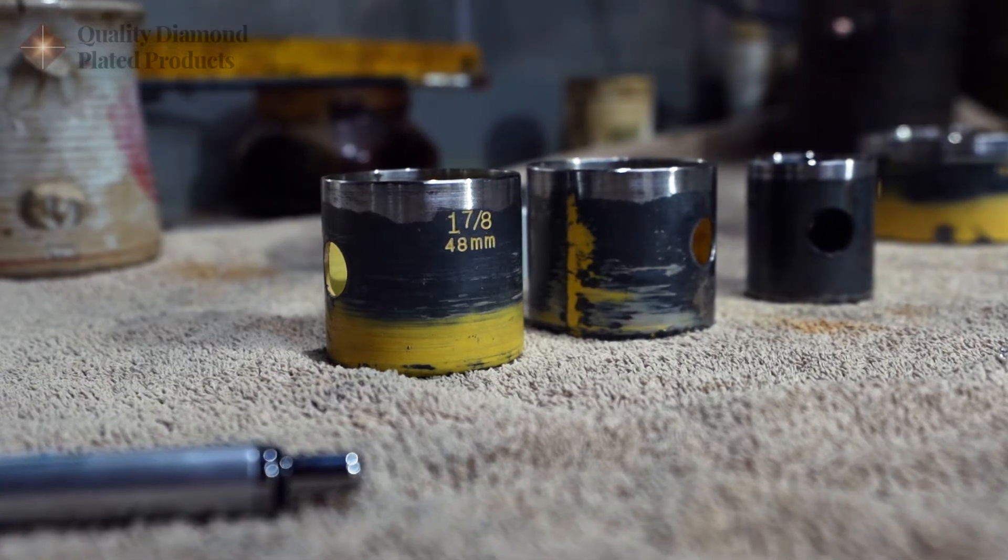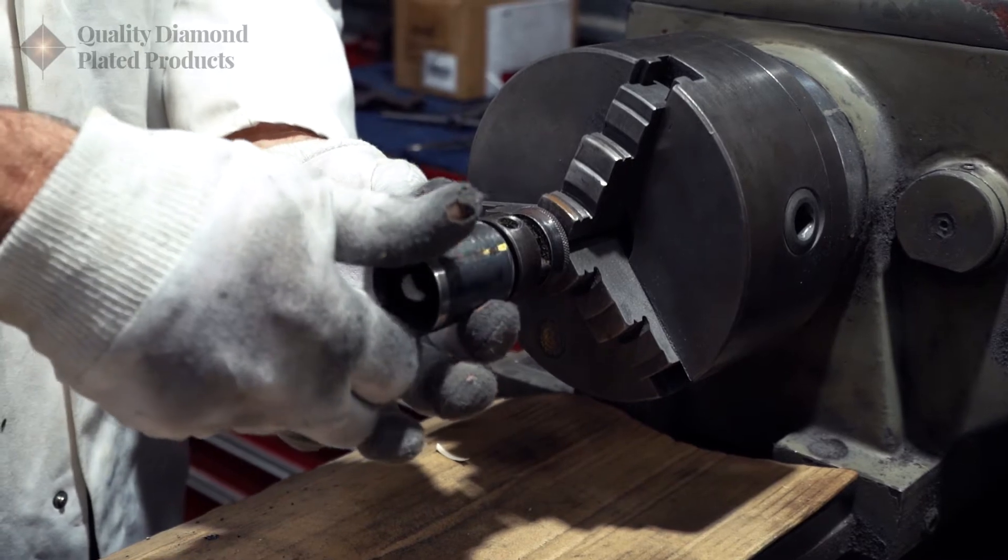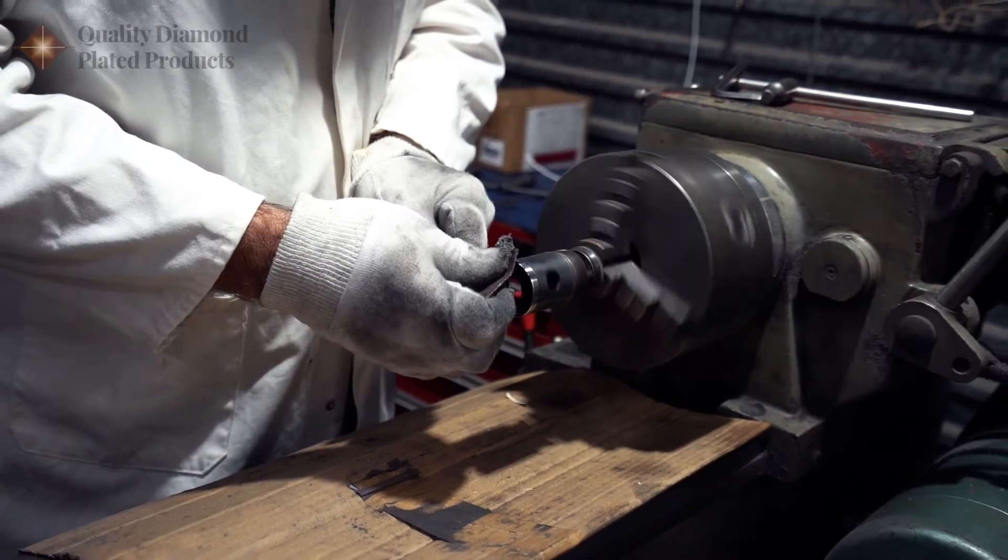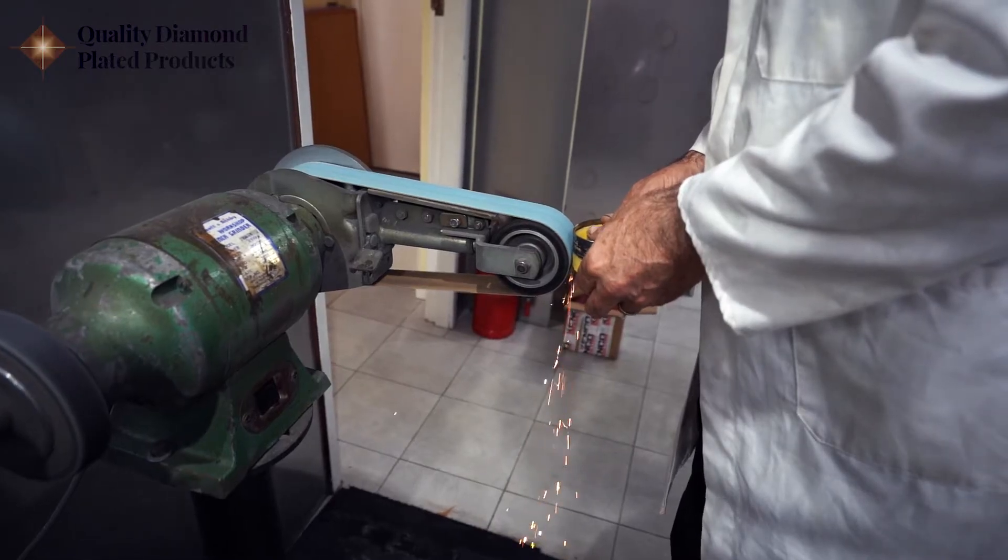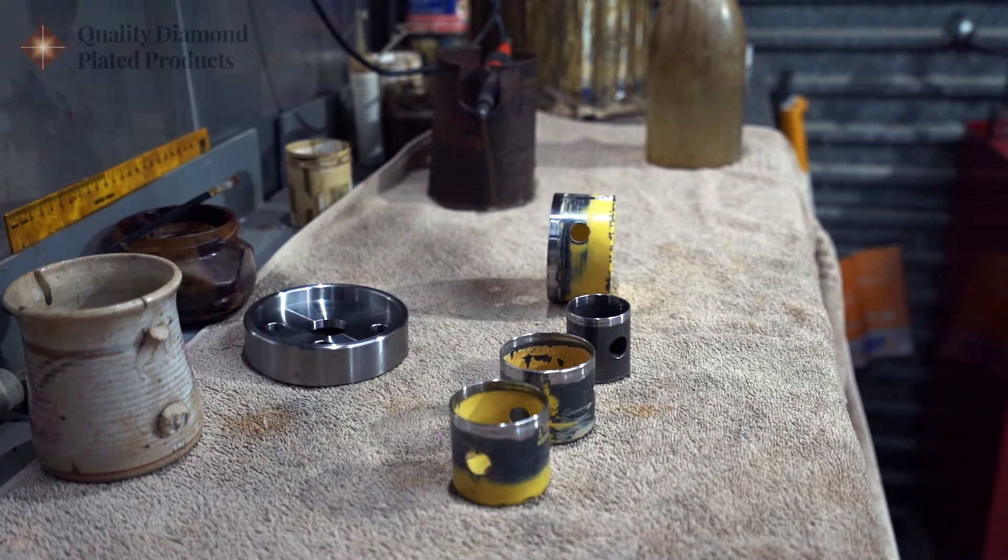The process begins with the mechanical preparation of the component either by polishing or grinding to remove damage and corroded areas to start with a clean metal surface.